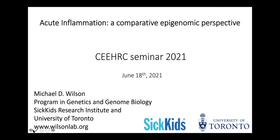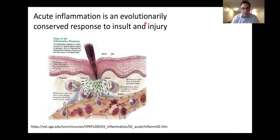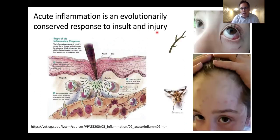Thank you, Geneviève, and to the organizers for the invitation. Acute inflammation is an evolutionarily conserved process — a natural response to insult and injury involved in many disease types including inflammatory disease, cancer, and cardiovascular disease. To illustrate: it's almost canoe camping season, and I recall my son's first trip where he got a stick in the eye — that immediate swelling response — and also deer flies biting, both representing natural responses to exogenous stimuli.